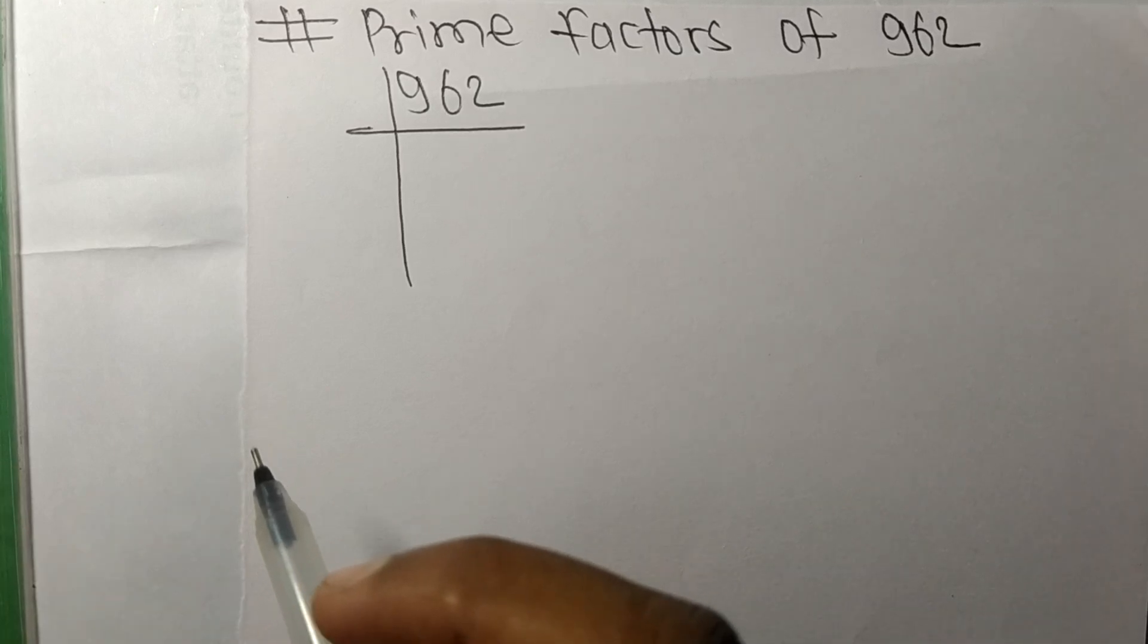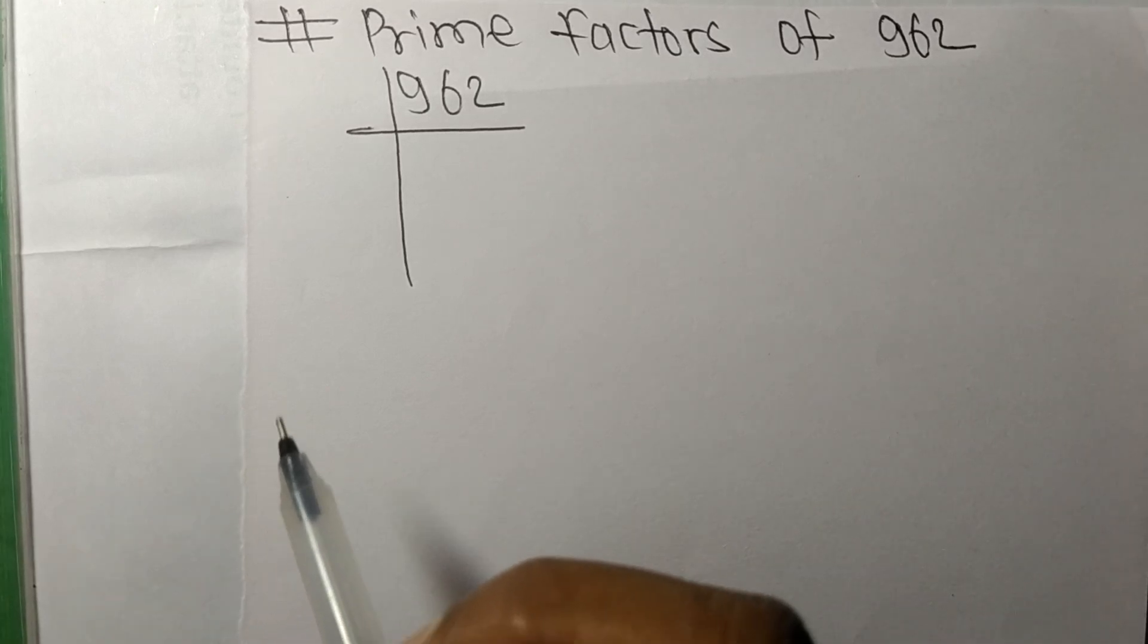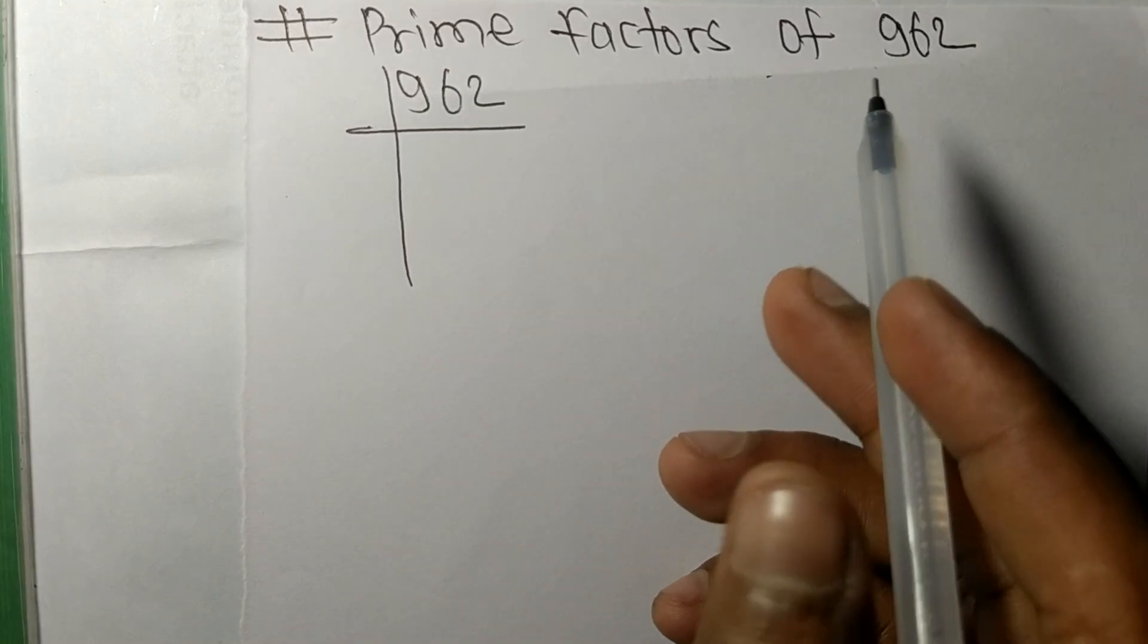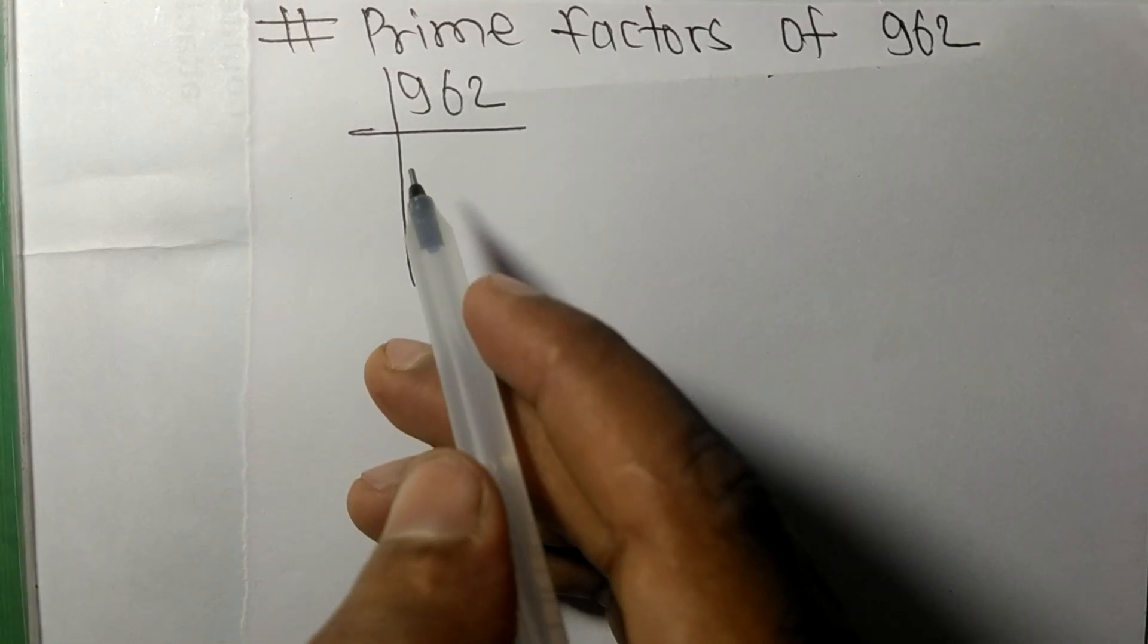Today in this video, we'll find the prime factors of 962. It's an even number, so it's divisible by 2.